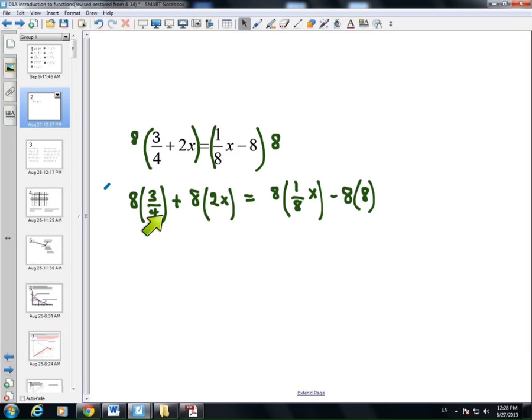So, we have 8 times 3/4, plus 8 times 2x, equals 8 times 1/8 x, minus 8 times 8. So, that's the distributive property, but rather than multiplying in my head and risk making mistakes, I distributed everything out first.